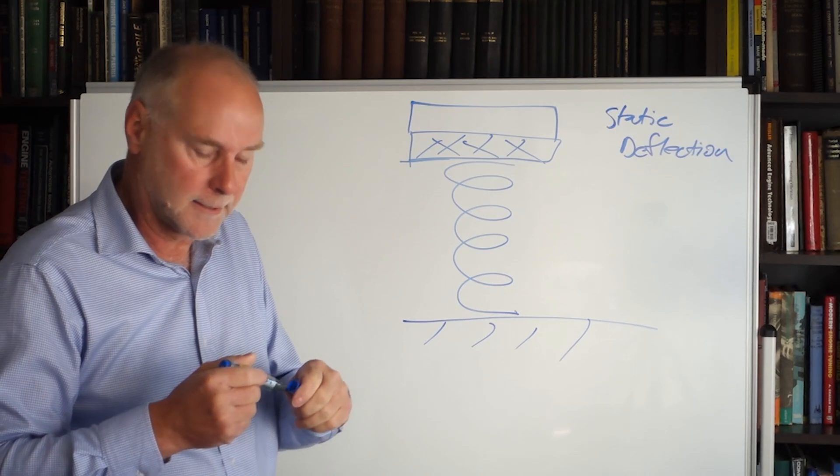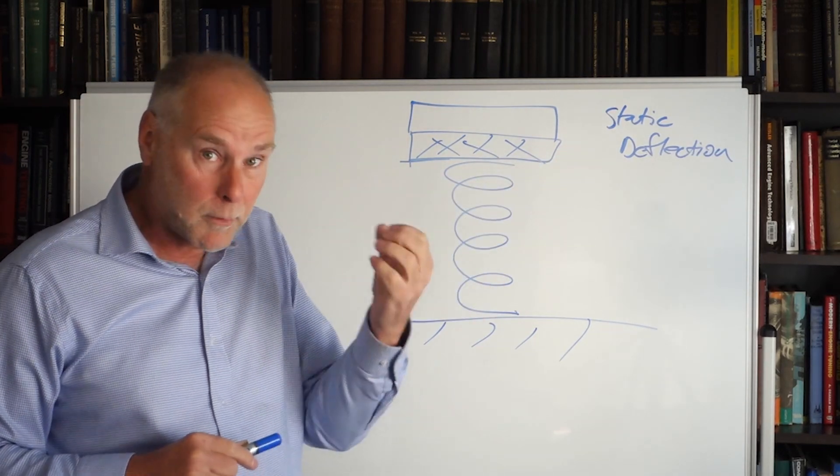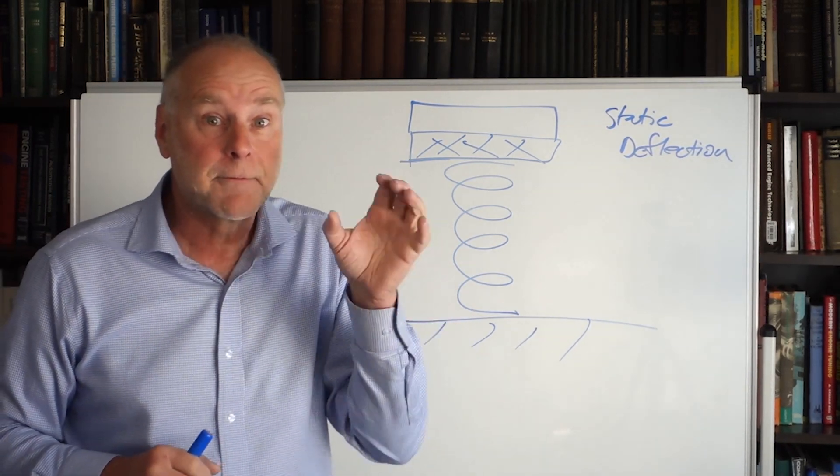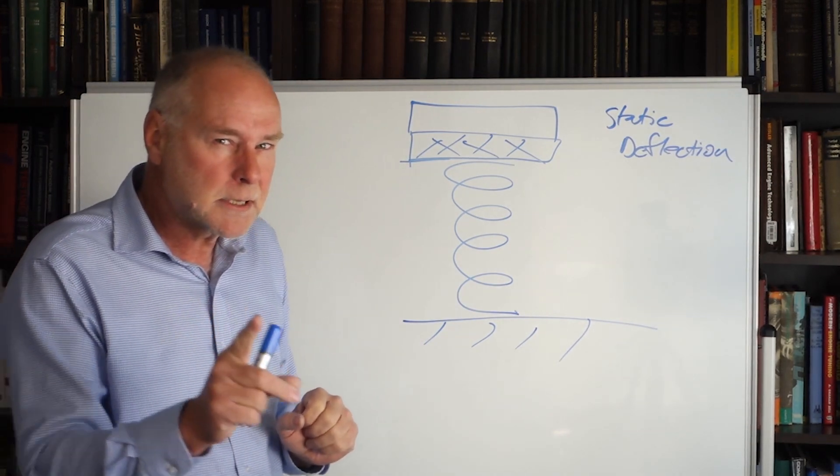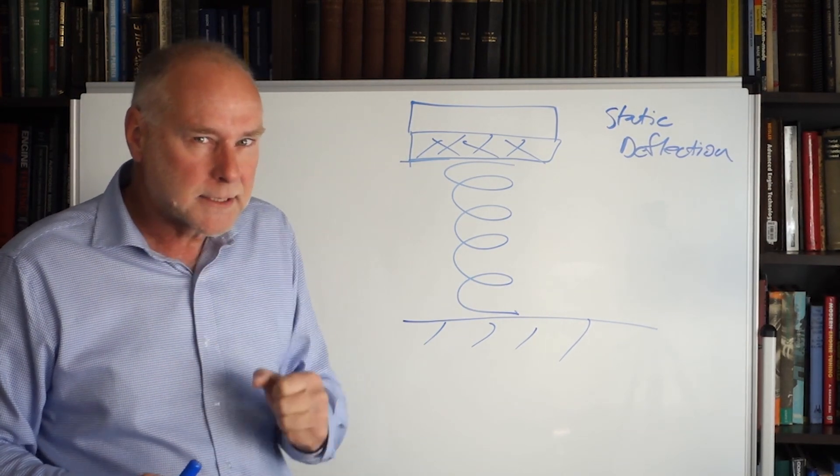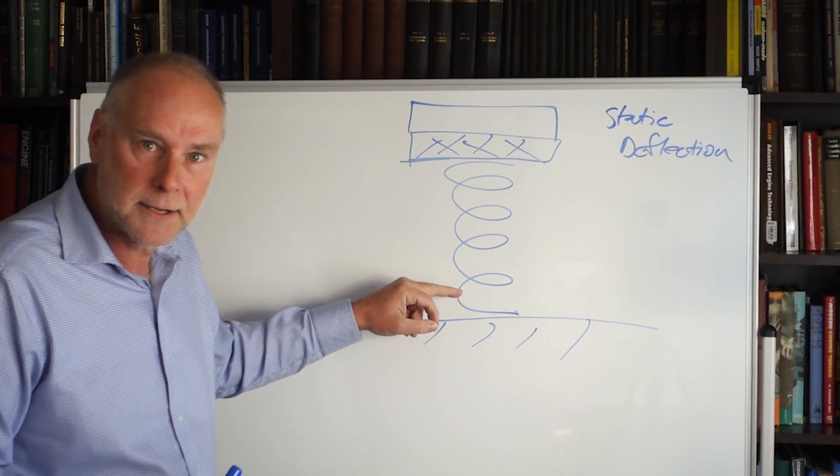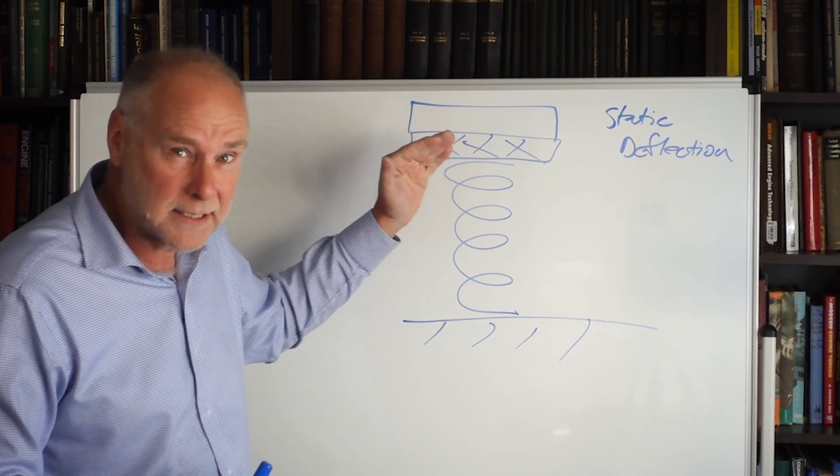There's our second weight. The static deflection will have increased, and when we time it with our stopwatch, we'll also find that the natural frequency has gone down. I hope you can start seeing that the number of bounces per second, the natural frequency, relates not only to the stiffness of the spring, it also relates to how big is the weight that it is supporting.